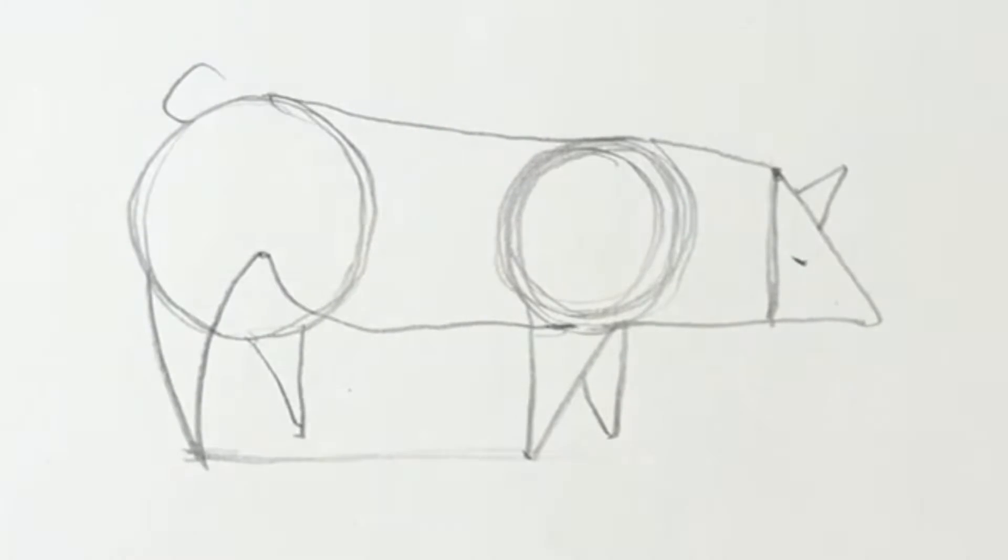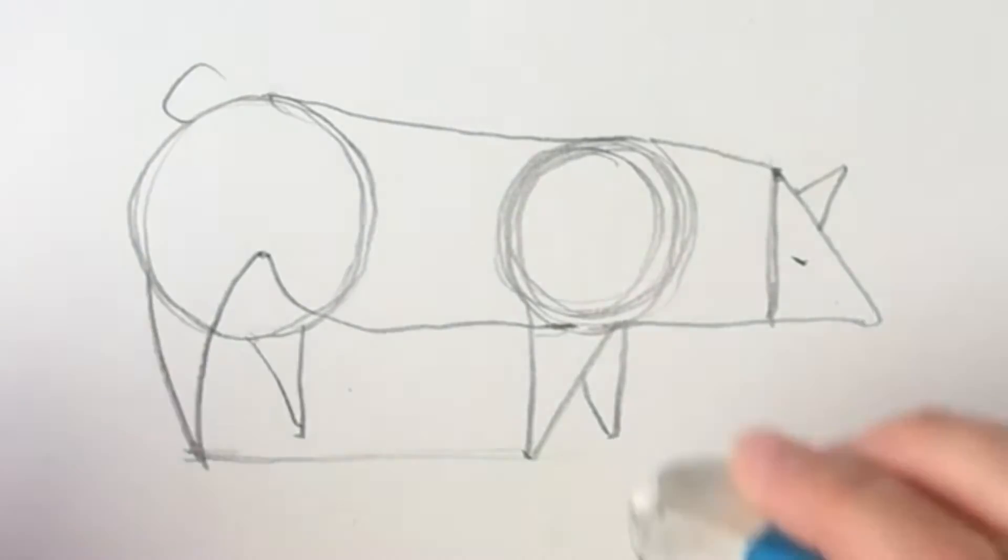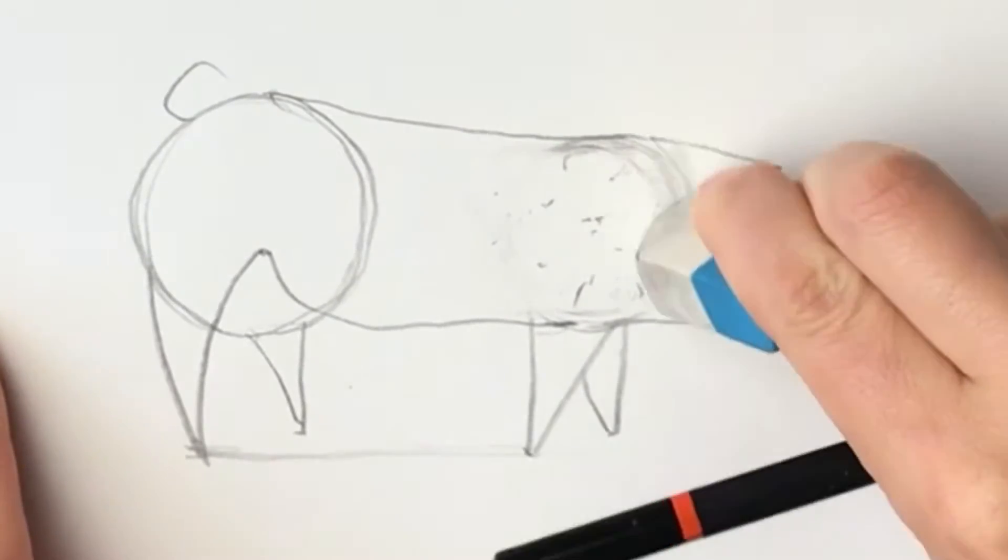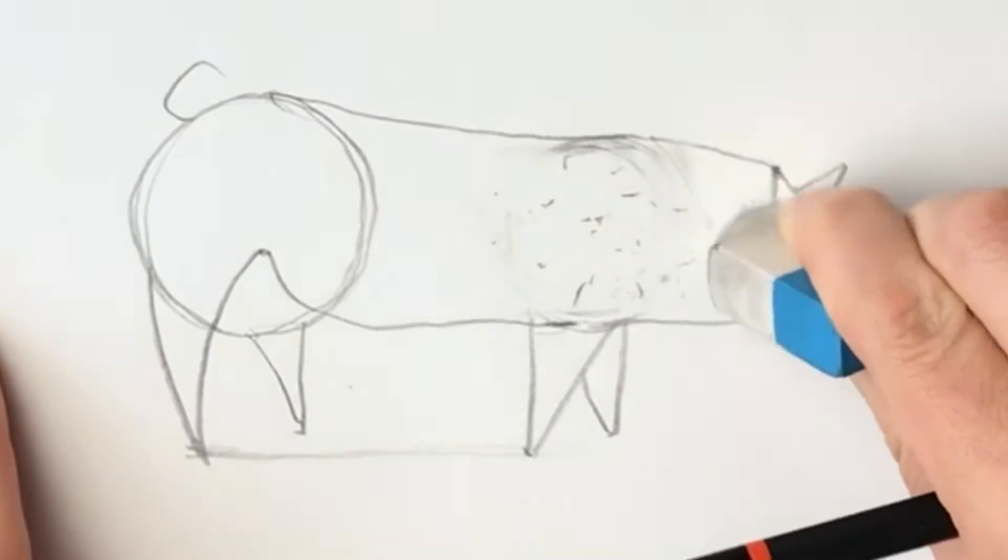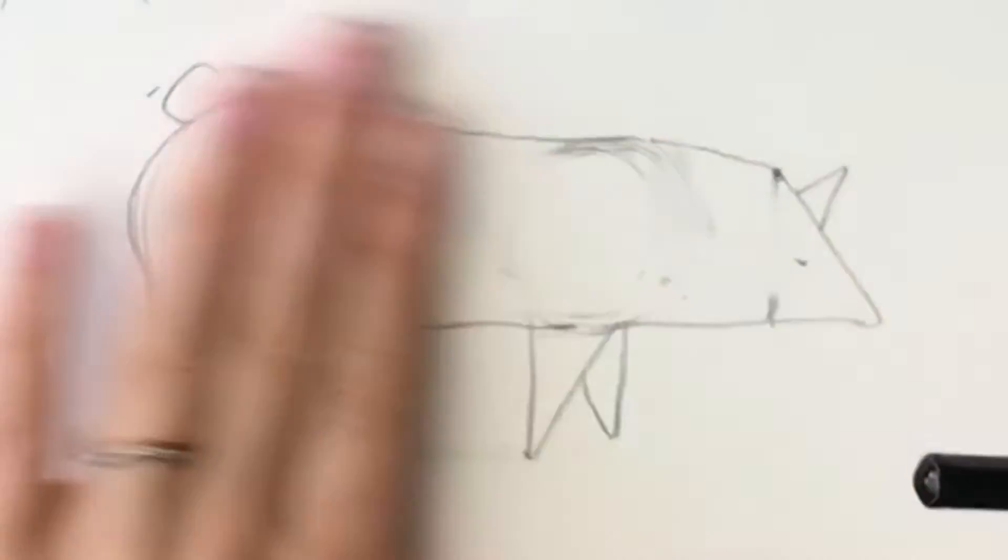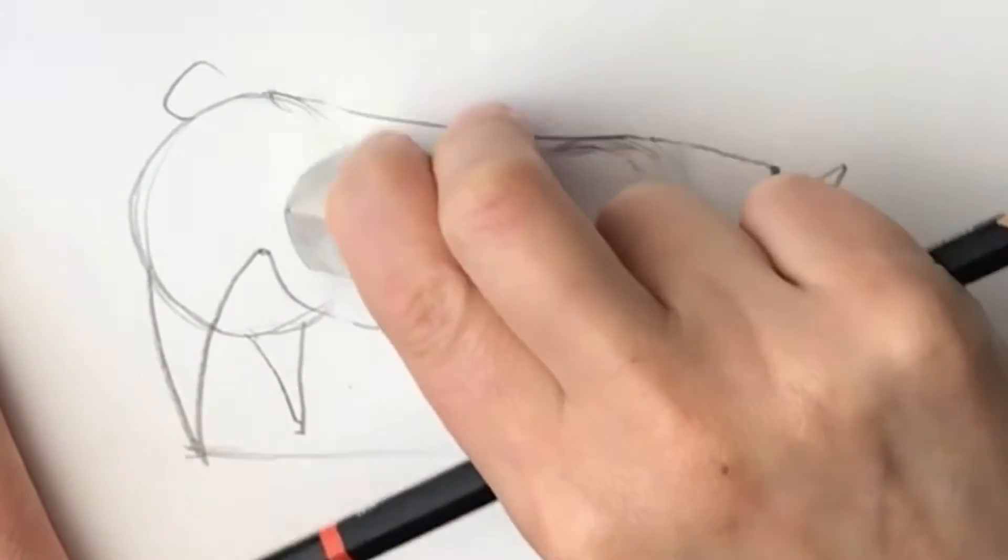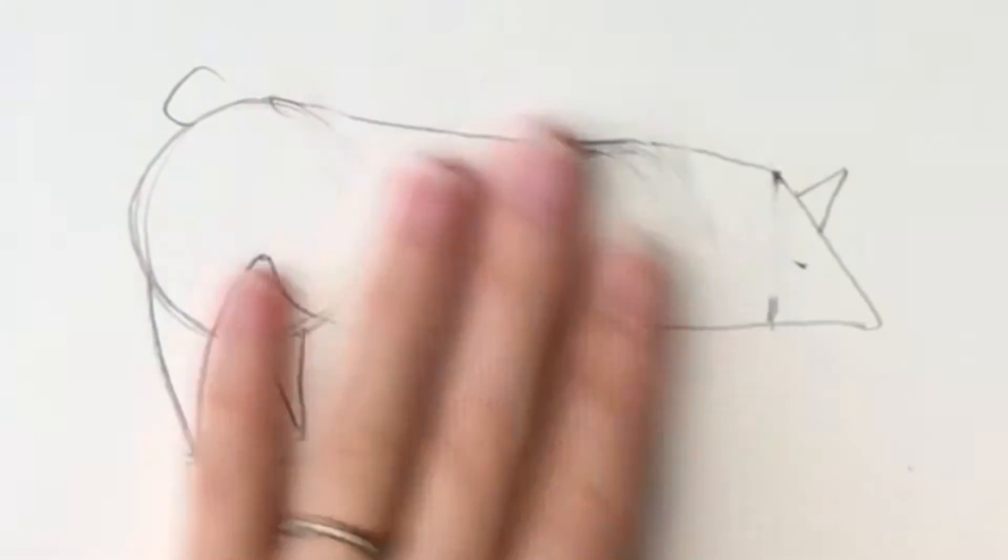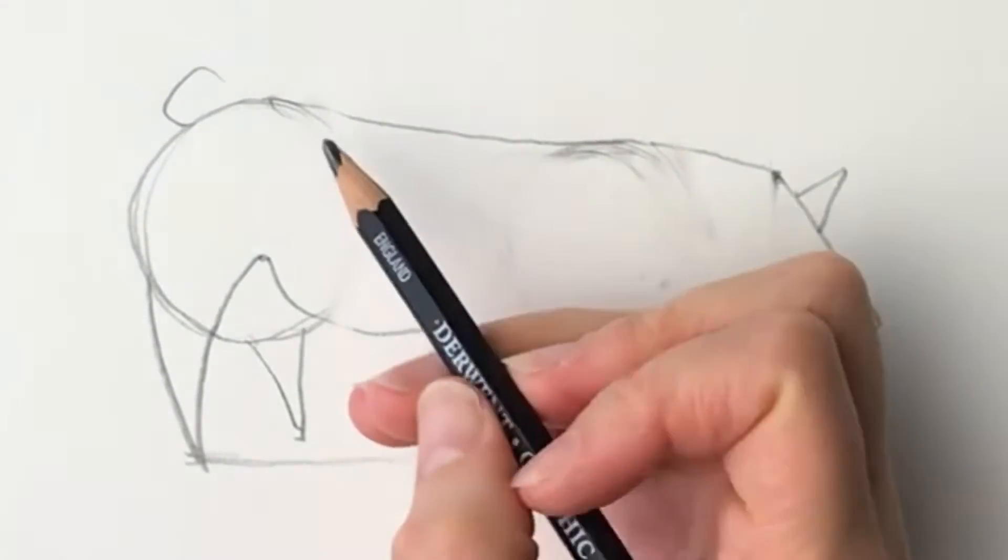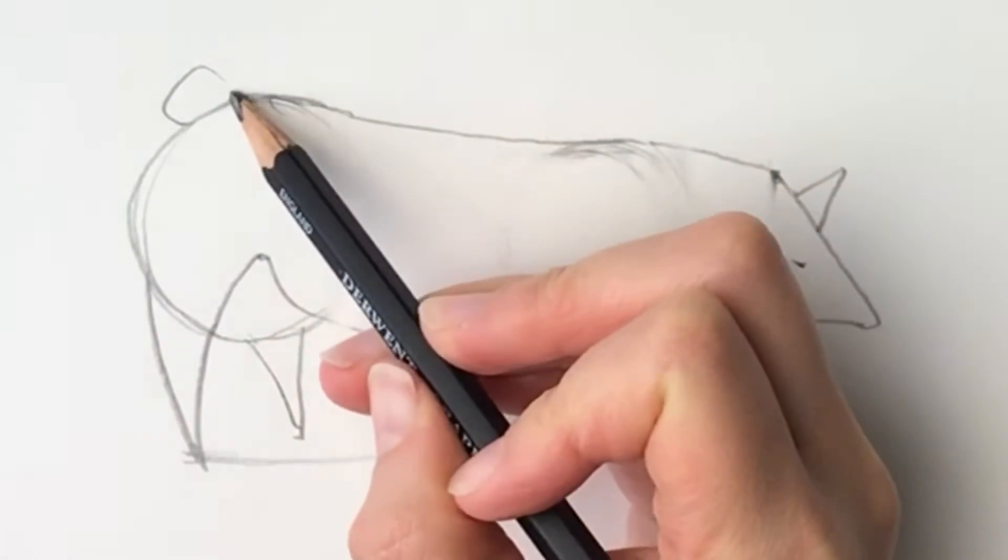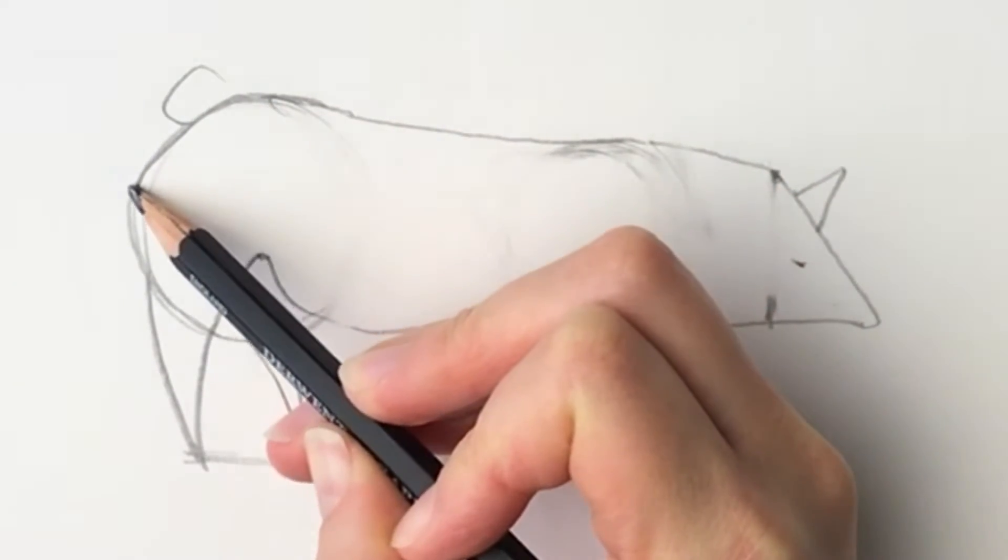So now time to make it look a little bit more realistic because this does not look like a pig yet. We're going to start by erasing some of these internal markings that we made. Let's just erase these guidelines. You can do this properly afterwards. I'm just going to erase a few bits. So let's make this outline a little bit more realistic. So just bring it round.